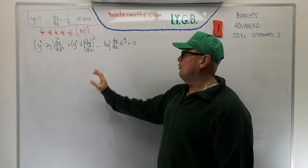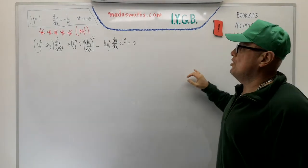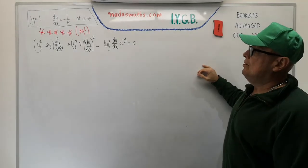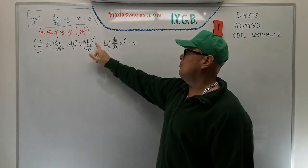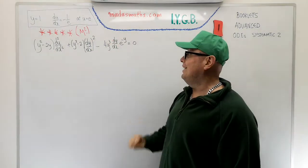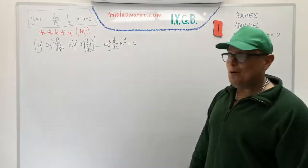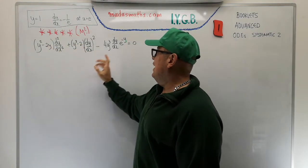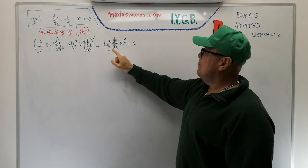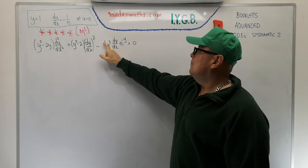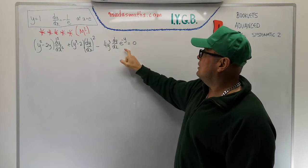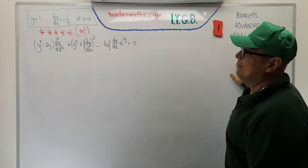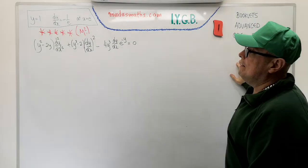Let's study first of all what are the features of this particular differential equation and where do we start. It's a second order. It's non-linear, because of course the dy/dx is squared. It has variable coefficients, so it doesn't have constants there — we've got functions of y — and to make it even worse, the dy/dx, apart from having algebraic quantities like y cubed, it's even got an exponential in there. So we've got everything going against us on this particular one, but it's not so bad if you know one little fact.